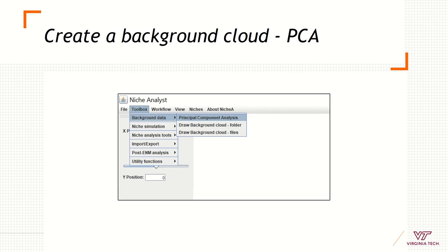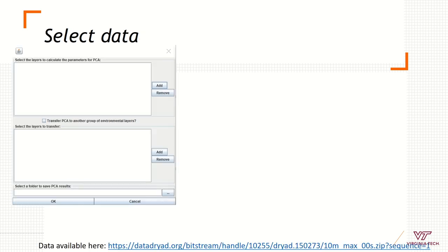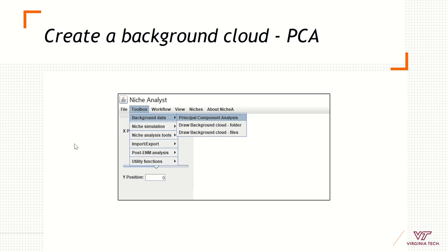You can create your own background by developing a principal component analysis of your original environmental variables, which can be done directly using NicheA with R running in the background. Go to Toolbox, then Background, then Principal Component Analysis.